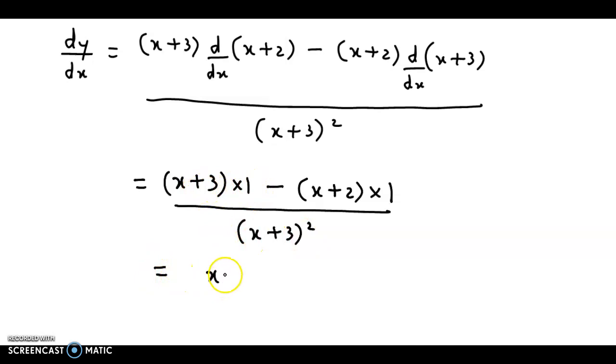So 1 times (x+3), that is (x+3). 1 times (x+2) is (x+2). But there is a minus sign here, so opening the brackets, we get -x - 2, divided by (x+3)².